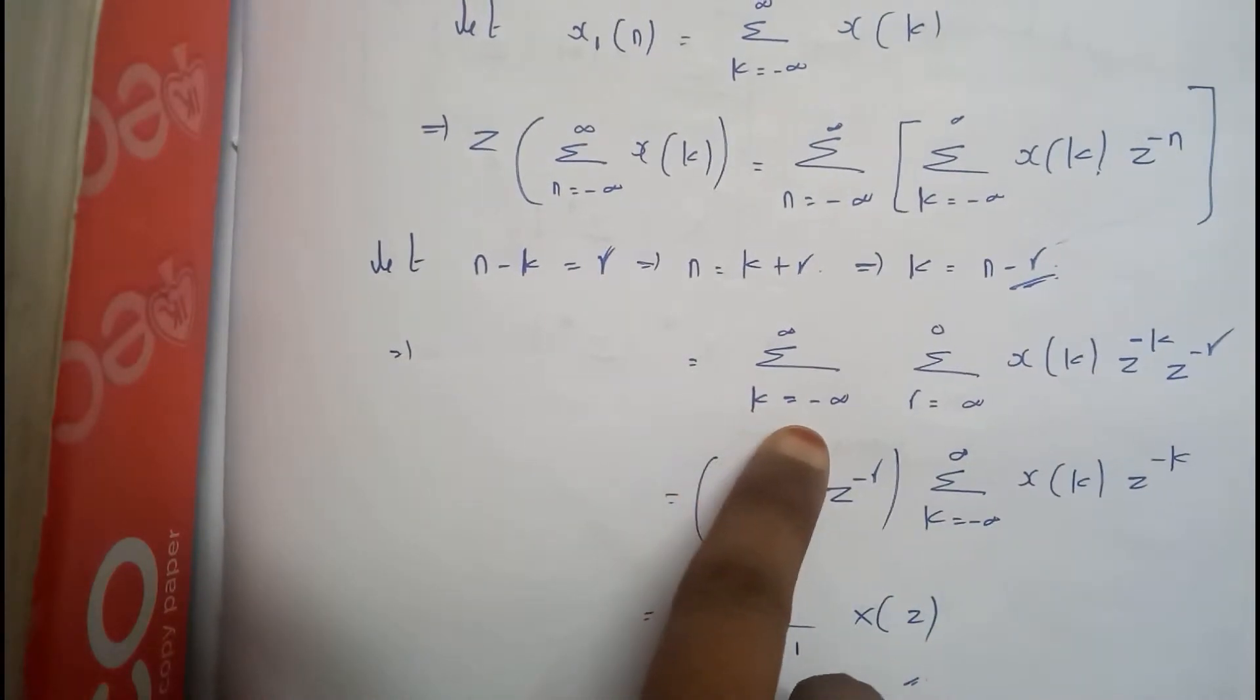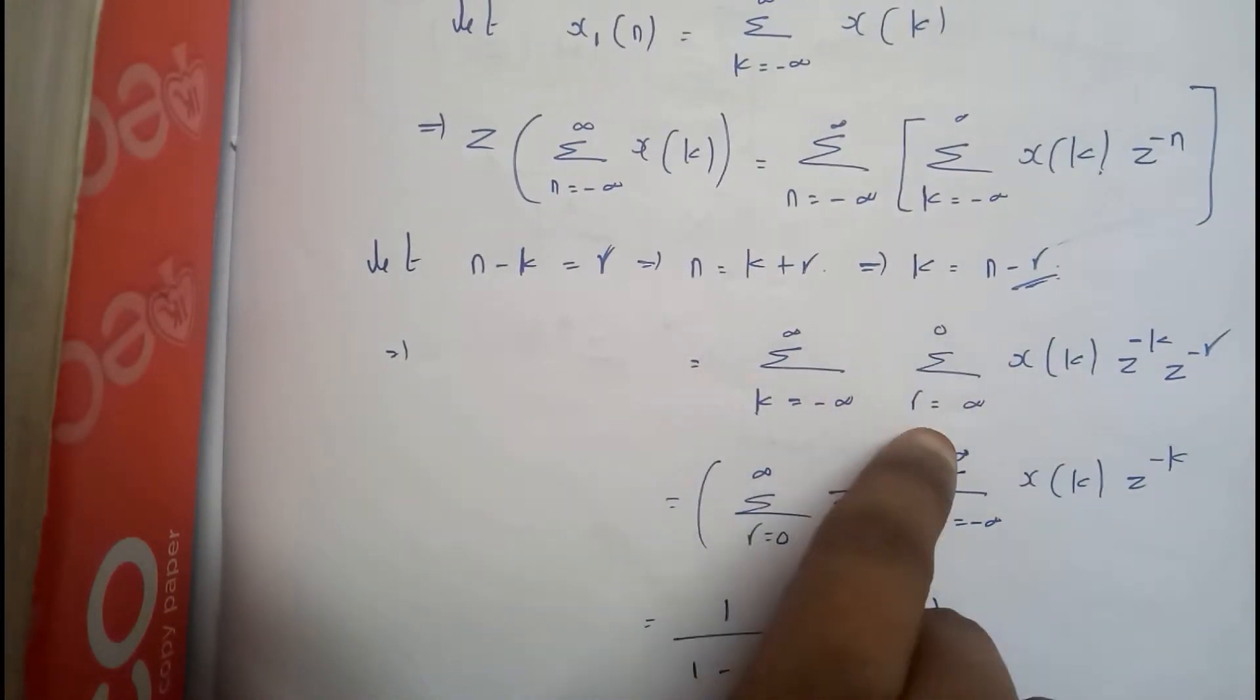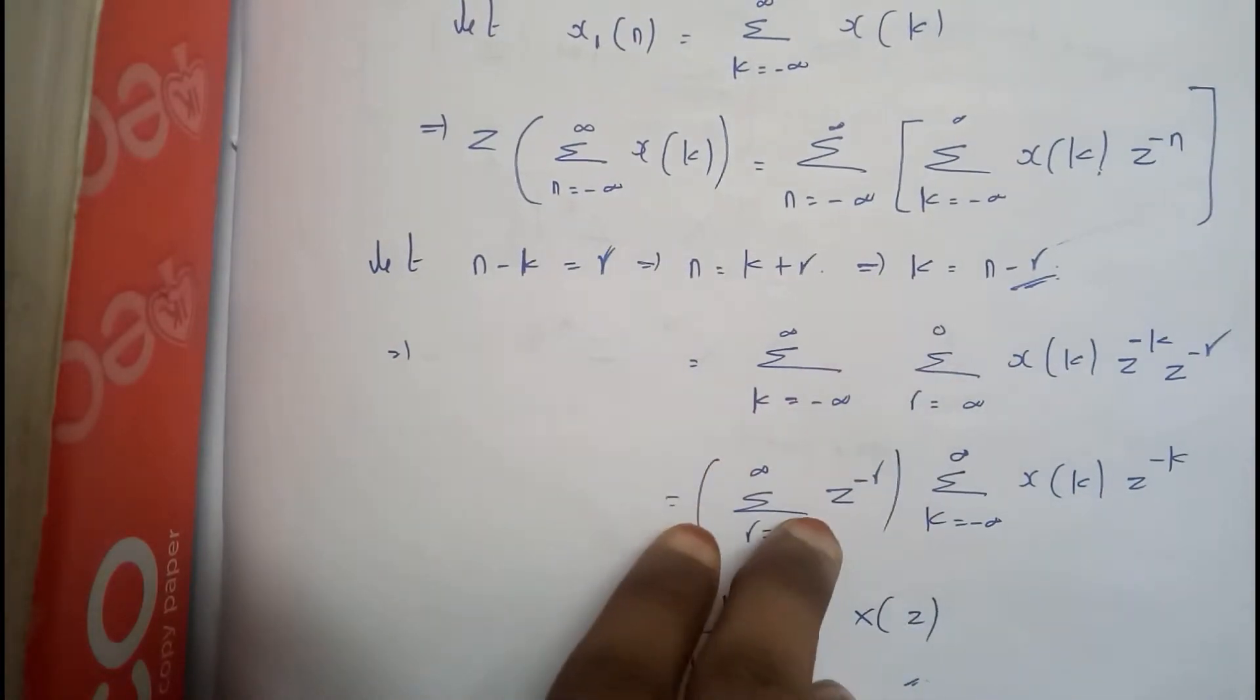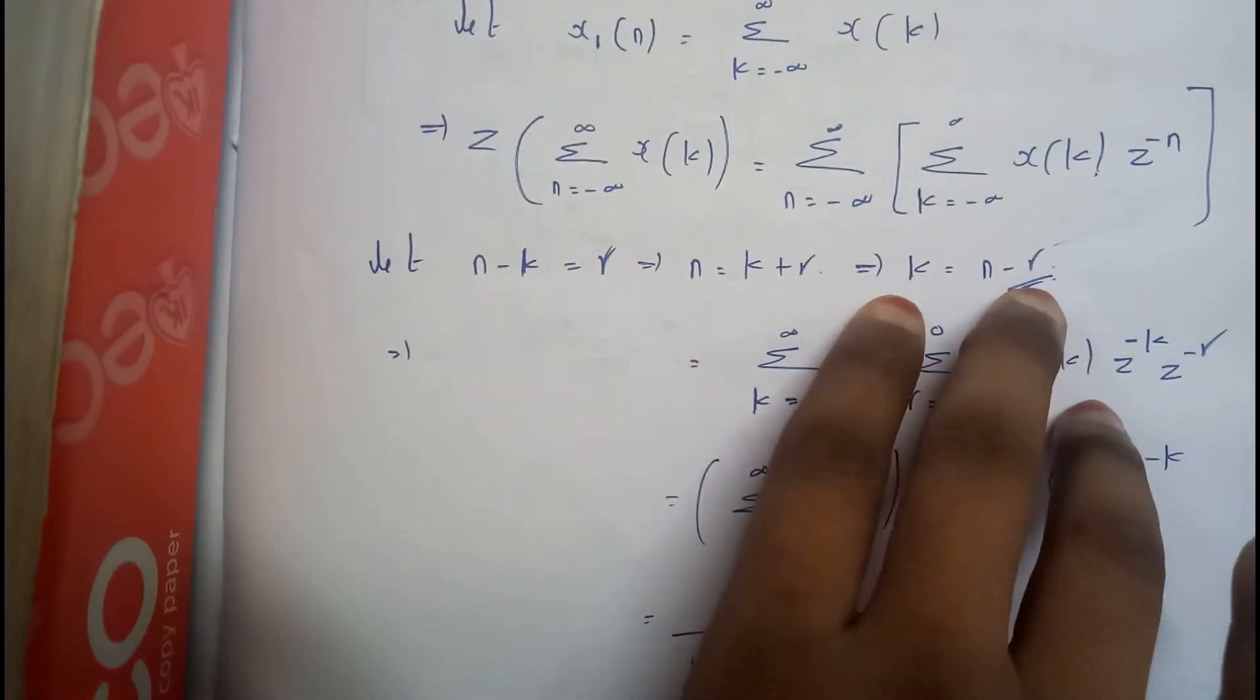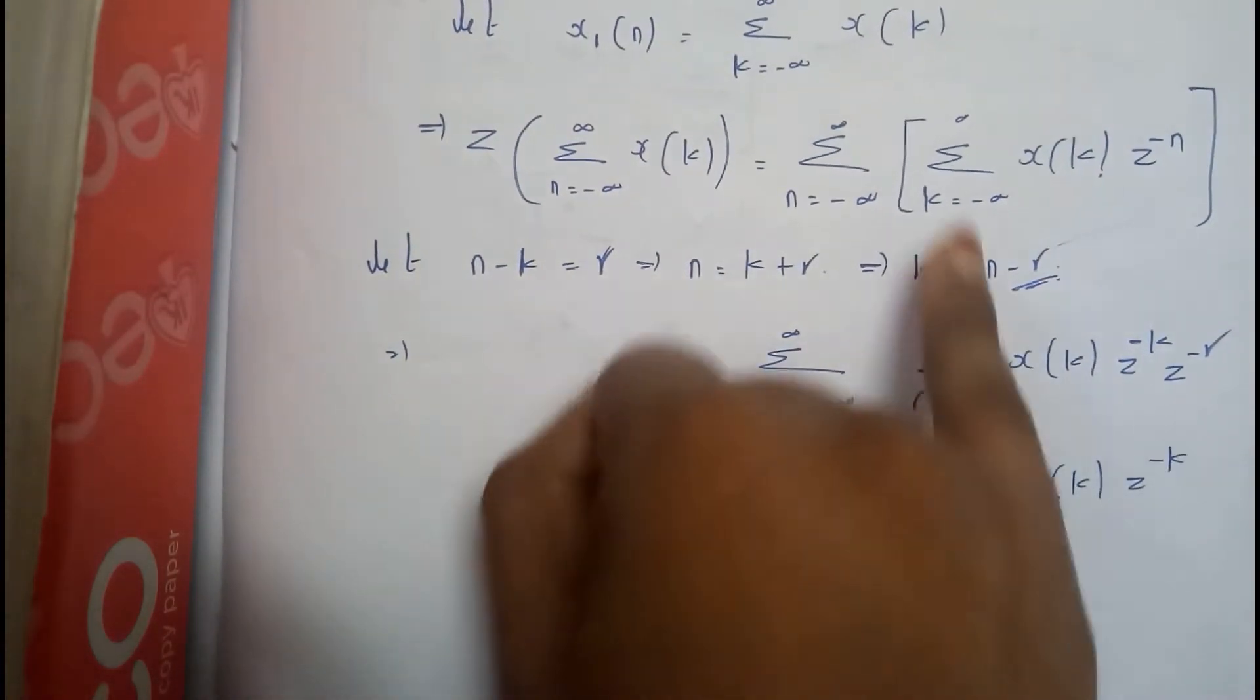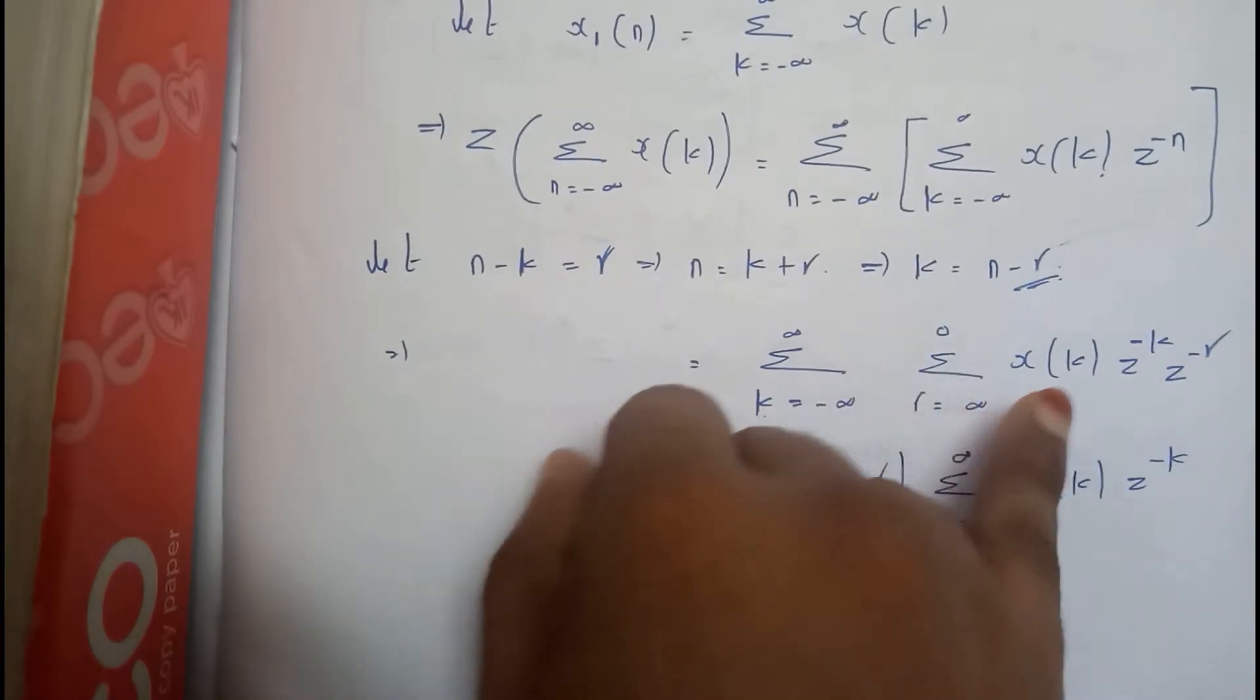So it became sigma k equals minus infinity to infinity, sigma r equals infinity to 0. As we convert the k and r relation, it's completely negative. If this is positive, this will be negative. That's the reason why I have converted it to the opposite sign.